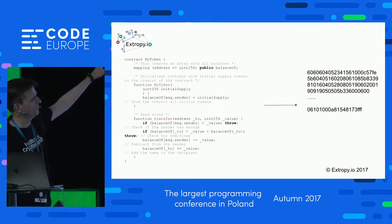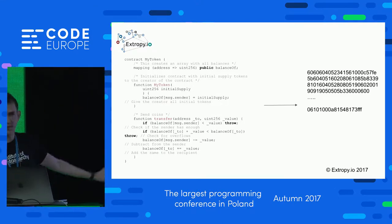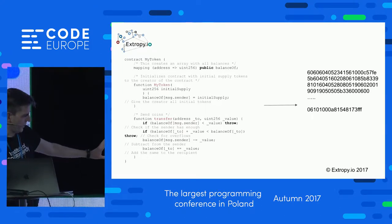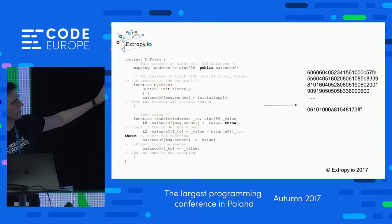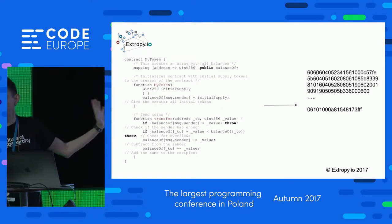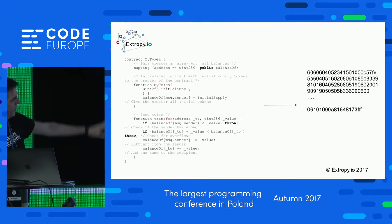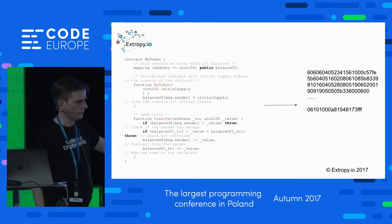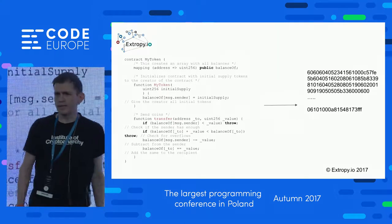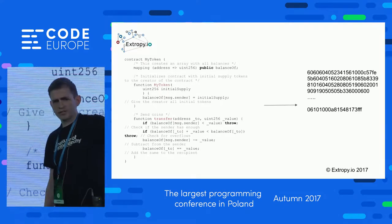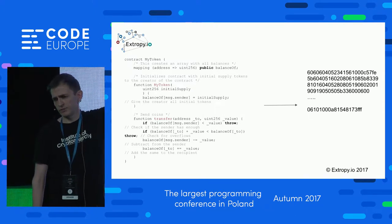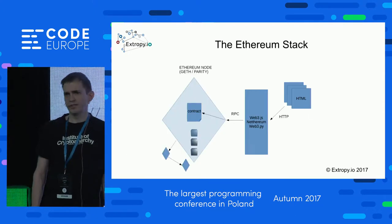This is an example of a smart contract written in a language called Solidity, which is the most popular language. This particular contract is part of writing a cryptocurrency — writing one of those in Ethereum is incredibly easy. You write a contract, compile it, it produces bytecode, and that bytecode is sent out as a smart contract to all the virtual machines and run when you call the functions.